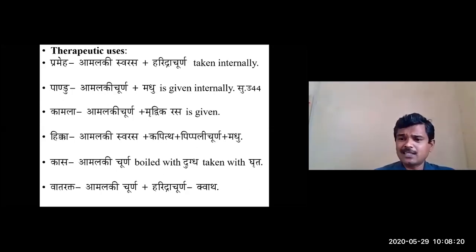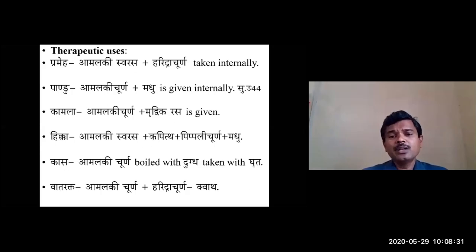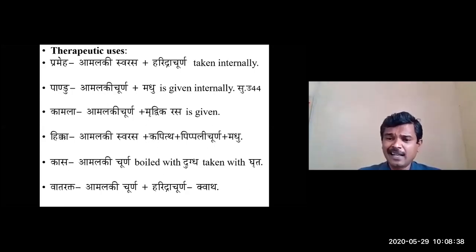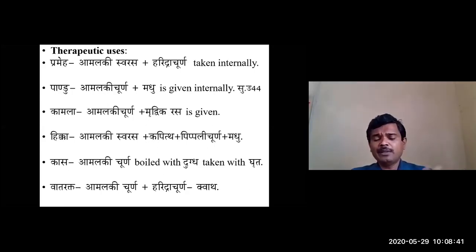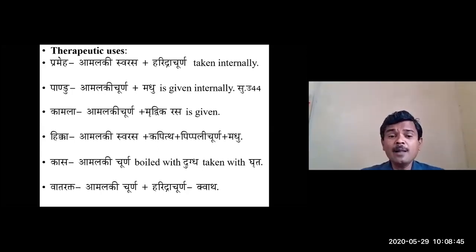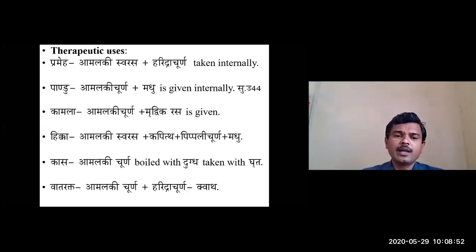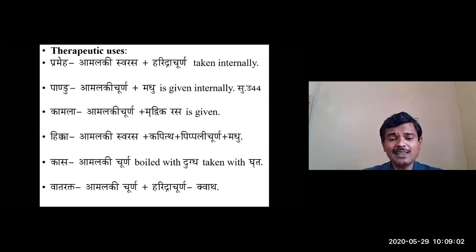In pandu (anemia): Amalaki churna given with madhu internally - reference from Sushruta Samhita Uttara Tantra. In kamala: Amalaki churna plus mrudhvika (dry grapes) rasa for lehana karma. In hikka: Amalaki swarasa plus kapitha plus pippali churna mixed with madhu, given internally. In kasa: Amalaki churna boiled with dugdha, taken with ghrita - especially for kafaja kasa. In vatarakta: Amalaki churna plus Haridra churna kvatha administered internally.